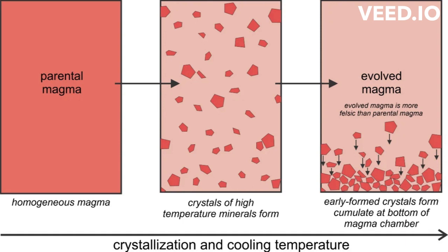Oxides like water, potassium oxide, and sodium oxide should increase with increasing crystal fractionation because they do not enter early crystallizing phases. Furthermore, we would expect incompatible trace element concentrations to increase with fractionation and compatible trace element concentrations to decrease. This is generally what is observed in igneous rocks. Because of this, and the fact that crystal fractionation is easy to envision and somewhat easy to test, crystal fractionation is often implicitly assumed to be the dominant process of magmatic differentiation.